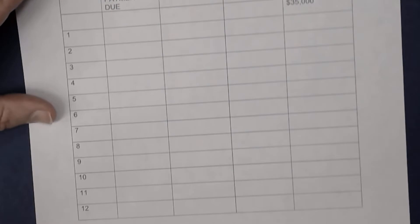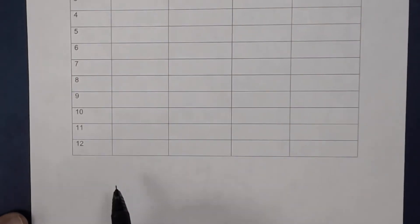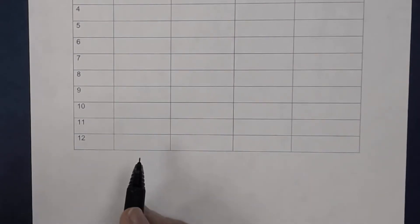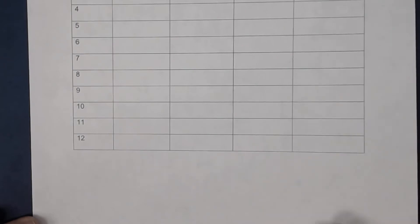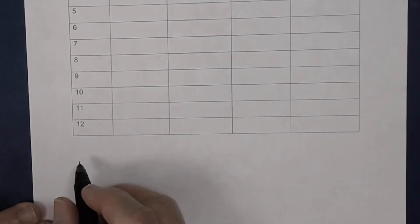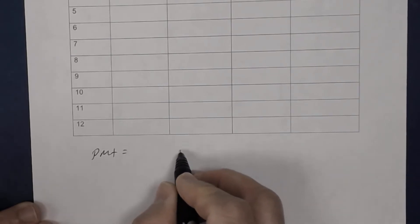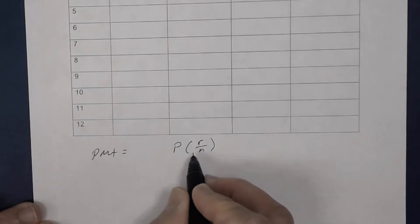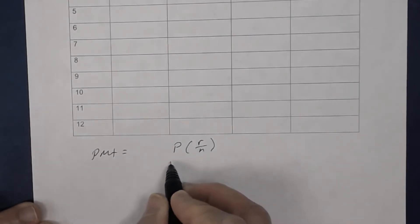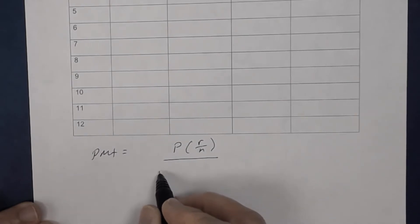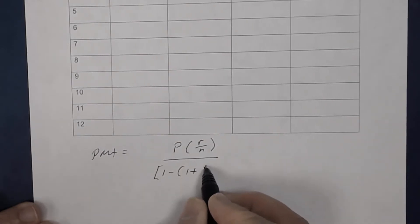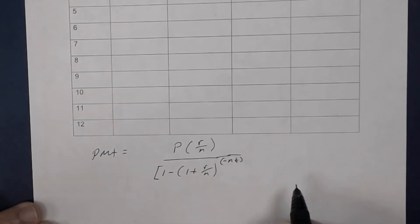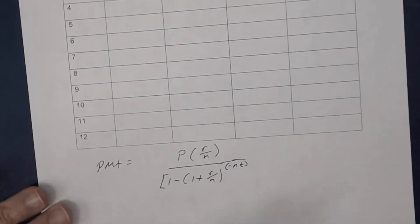Remember the formula for finding the monthly car payment on an installment plan — we use the same formula for a mortgage payment as well. The payment equals the amount you borrow times the rate divided by the number of months in a year (12), divided by 1 minus (1 plus r divided by n) raised to the negative n times t power.